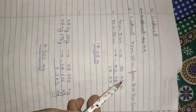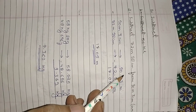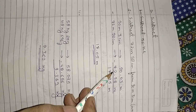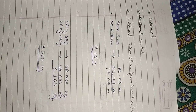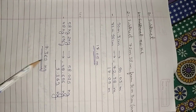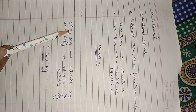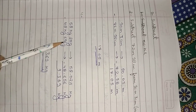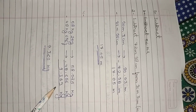Now subtract: 90.03 minus 72.98. 13 minus 8 equals 5, carry; 9 minus 9 equals 0; then continue the subtraction to get the result 17.05 meters.